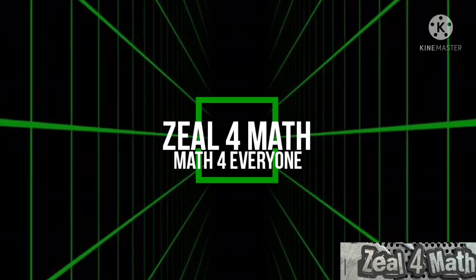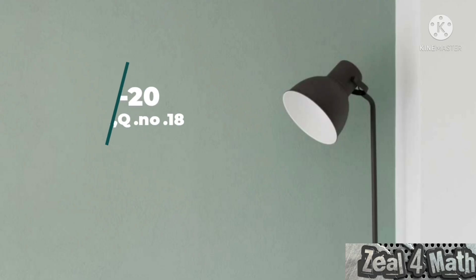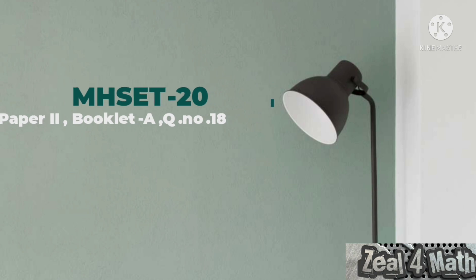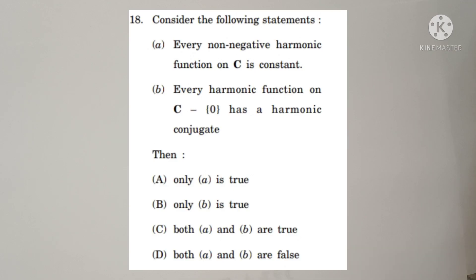Welcome to Zil4Math. We are going to do question number 18. Consider the following statements. Statement A is: every non-negative harmonic function on C is constant. Statement B is: every harmonic function on C minus 0 has a harmonic conjugate.